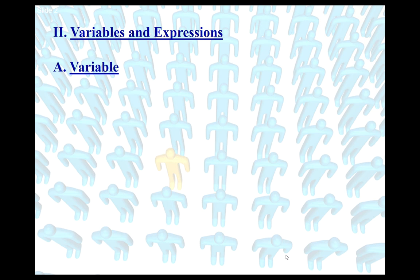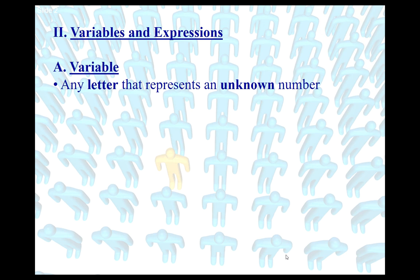Let's start off by defining what a variable is. When you see that word variable, you might be thinking of the word vary. Something that varies means that it is going to change or it can change. In mathematics, we use letters to represent a variable. A variable or a letter in mathematics represents some kind of value that can change depending on the situation.